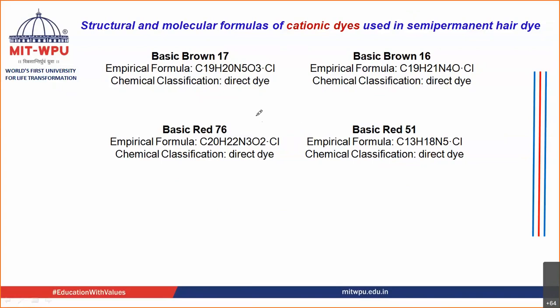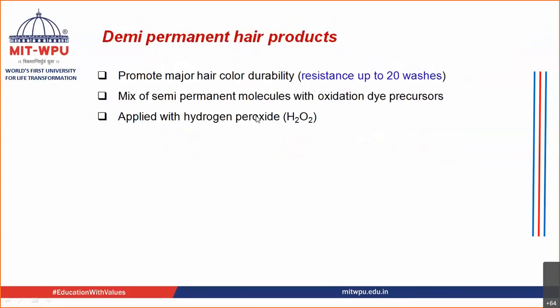Moving ahead to your demi-permanent hair dyeing system. These demi-permanent dyes usually resist up to 20 washes. So your temporary is for one wash; your semi-permanent lasts for about three to six washes; and your demi-permanent hair dye is usually retained up to about 20 washes. The durability is a little bit higher compared to your semi-permanent dyes.